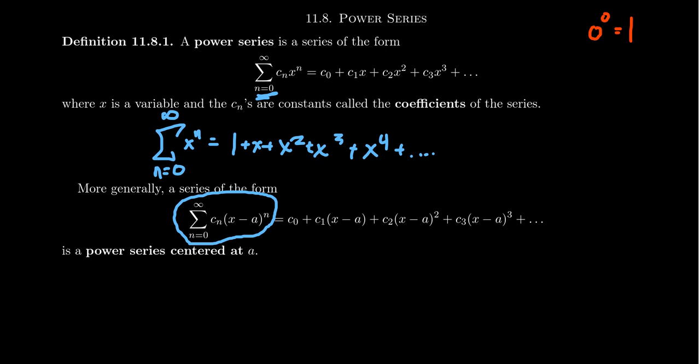So our series will start at n equals 0. We take the sum where n equals 0 to infinity, and then take your coefficient sequence cn and times it by x minus a to the n. This essentially represents a horizontal shift by a units from the expression we saw before.